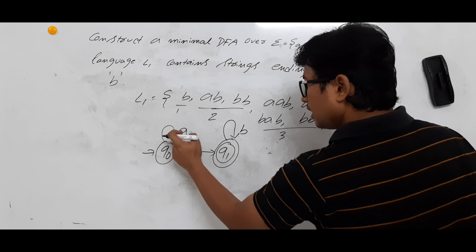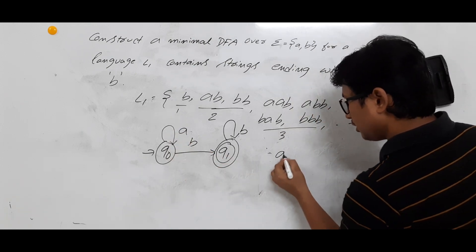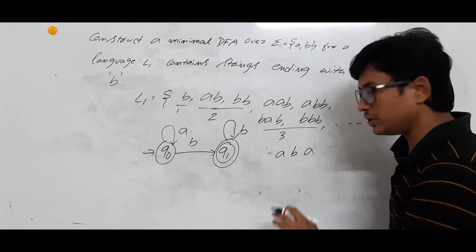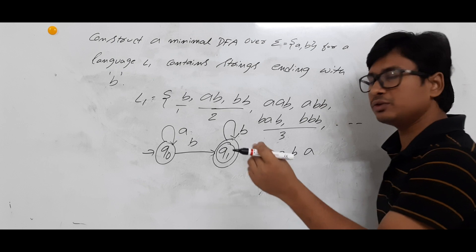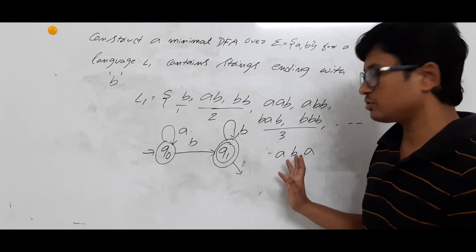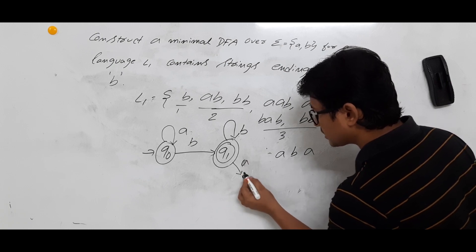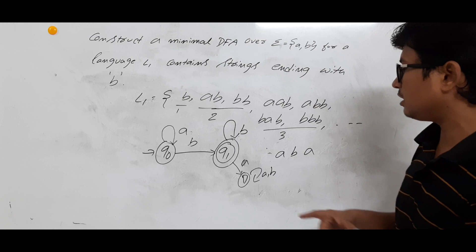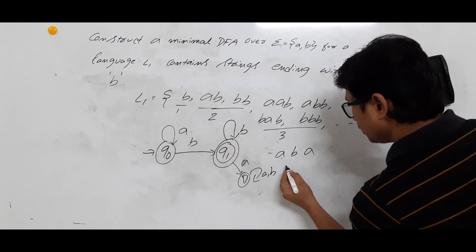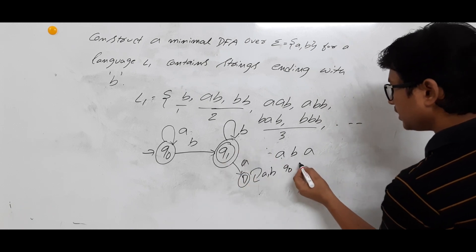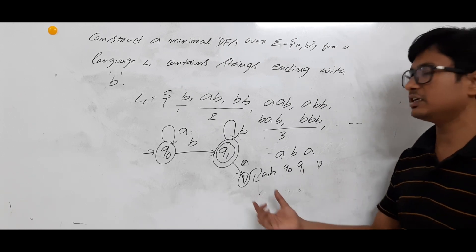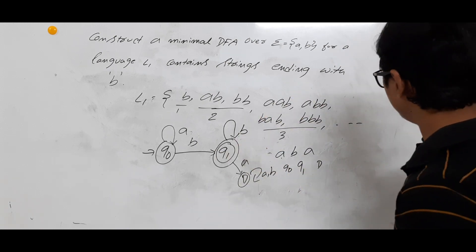Consider the string A, B, A. From Q0 on A → Q0, on B → Q1, on A → dead state D. It reaches a non-final state, so ABA is not accepted. That seems fine. But now consider A, B, A, B — does this string belong to L1? Yes, it belongs to L1 because it ends with B. Let's trace it with dead state: Q0 on A → Q0, on B → Q1, on A → dead state D, on B → D. It reaches D, a non-final state — so ABAB is rejected. But ABAB should be accepted!